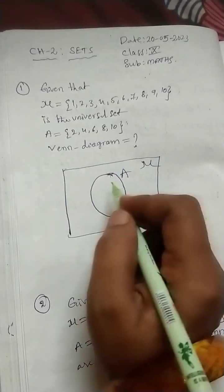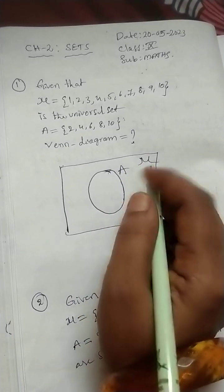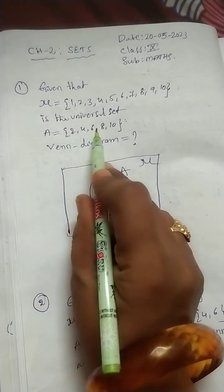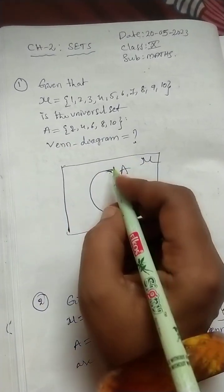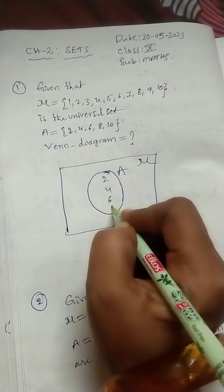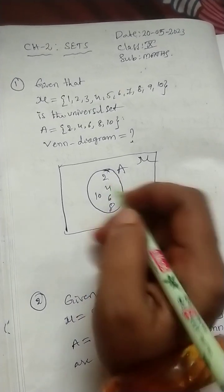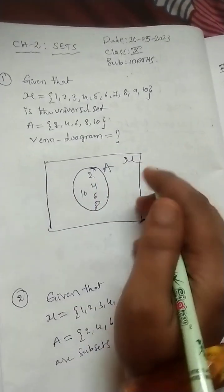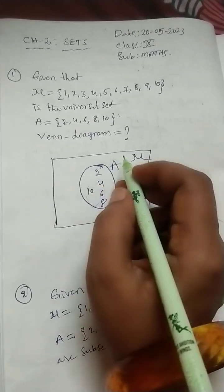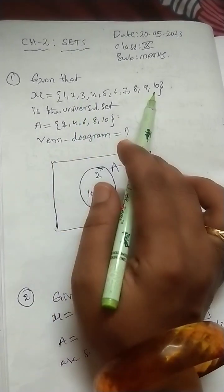Just simply I am drawing. But when you are drawing, better to use the scale for rectangle. This is the Mu. Next, this is set A. We are using rectangles and circles I said now in the Venn diagrams. Now, here A having 2, 4, 6, 8, 10. So, here 2, 4, 6, 8, 10.